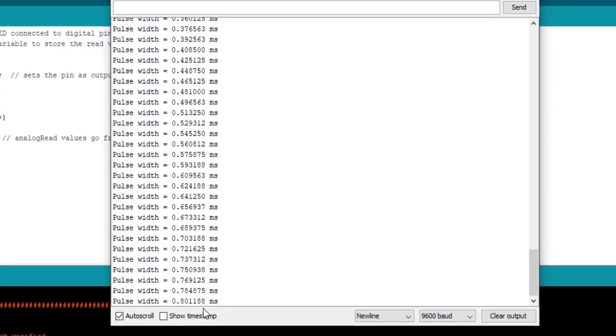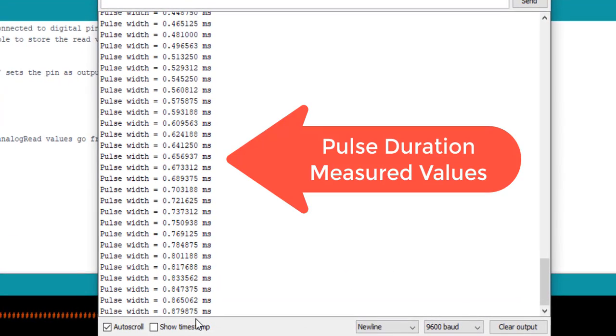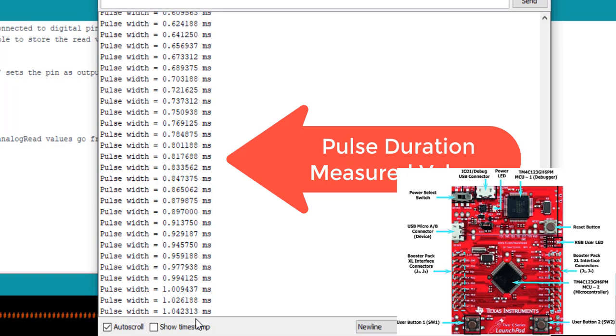This video is a demo of pulse width or pulse duration measurement using TM4C123 microcontroller programmable timer block.